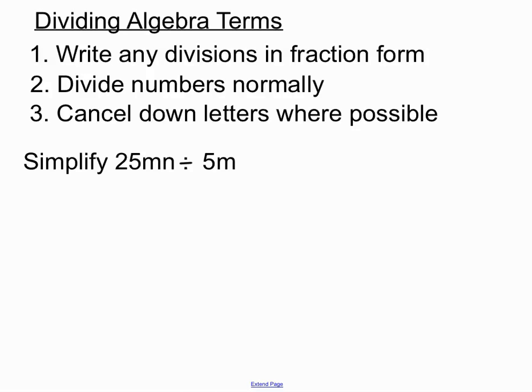Let's have a look at an example. This division question is written out horizontally, so when we're starting off as our first step, let's write this division in fraction form. The bottom of any fraction divides into the top, so that 5m is going to be on the bottom. We're going to write the 25mn on top and we're going to write the 5m on the bottom of the fraction, just so that things work a little bit better for our brain.